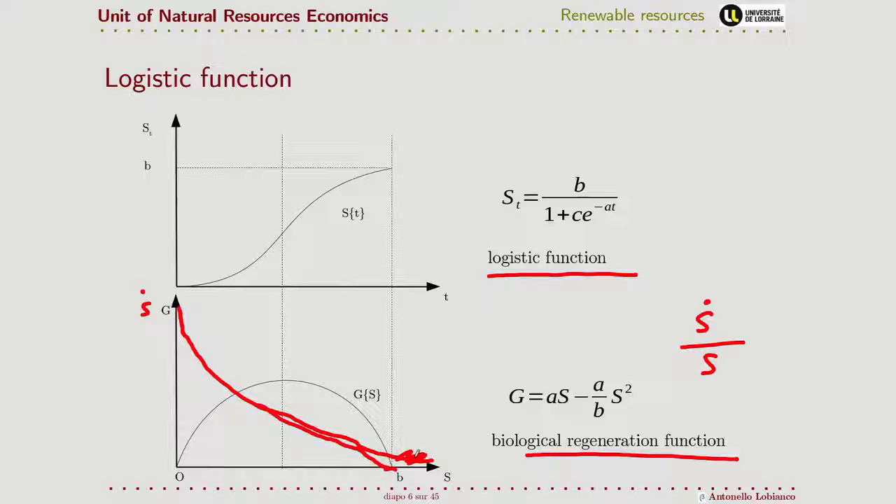The biological regeneration function is a differential equation where the resource growth depends from its own stock. This is why we call it renewable stock resources, because they exhibit density-dependent growth. In the growth-stock space, it draws as a concave parabola where the maximum is reached at the stock level equal to b over 2, and the maximum itself, known as maximum sustainable yield, is equal to ab over 4. We can find these two values by simply finding the first-order conditions for the growth function.